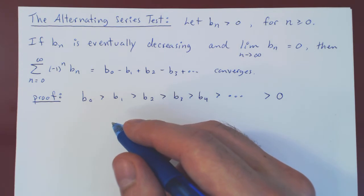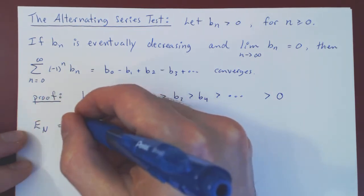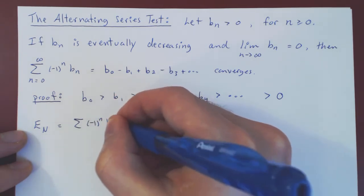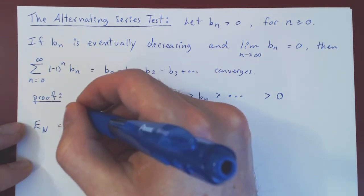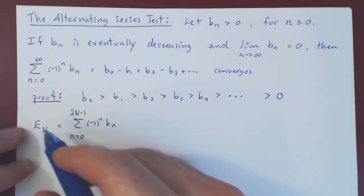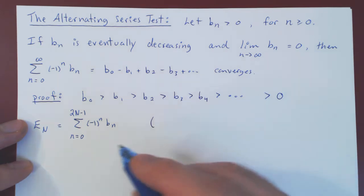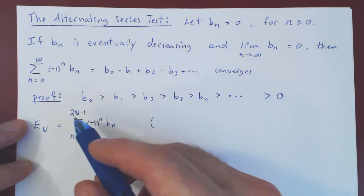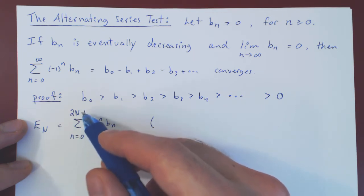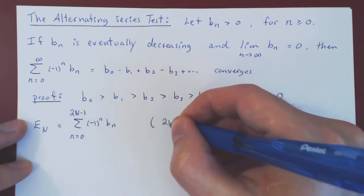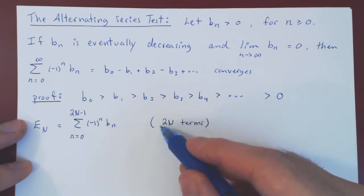Let's first consider the sequence of partial sums when we are summing an even number of terms. We'll call this En — the sum of (-1)^n * Bn as n goes from 0 to 2N minus 1. For any uppercase N, the number of terms is 2N minus 1 minus 0 plus 1, which gives 2N terms. And for any choice of N, 2N is an even number. So here we're considering the sequence of partial sums when we're summing an even number of terms.